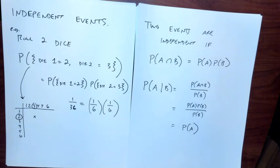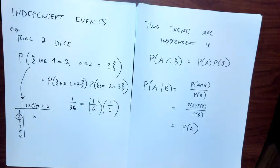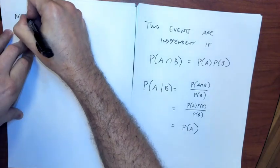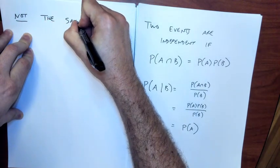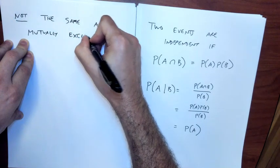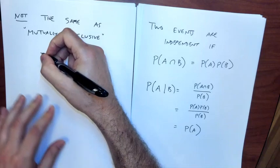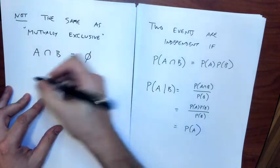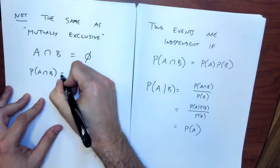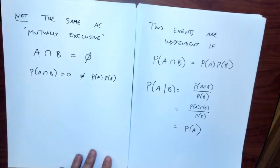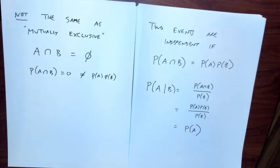Independence is not the same thing as mutually exclusive. Mutually exclusive means A intersect B is the empty set, so the probability of both happening is zero. That's probably not the same as the probability of A times the probability of B. This was related to a question on Piazza a couple days ago.